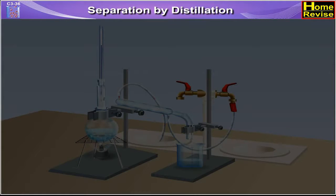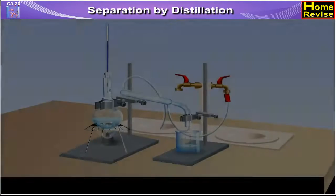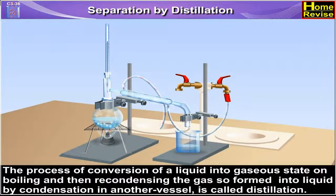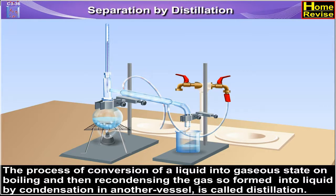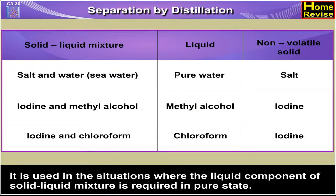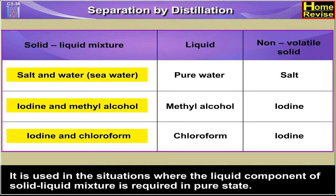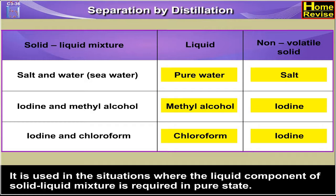Separation by Distillation. The process of conversion of a liquid into gaseous state on boiling and then recondensing the gas so formed into liquid by condensation in another vessel is called distillation. It is used in situations where the liquid component of a solid-liquid mixture is required in pure state.